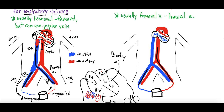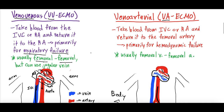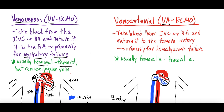We typically use the femoral veins on both sides, but you could also use the jugular vein in the neck, which also travels down to the heart. VV ECMO is a surrogate for respiratory failure when the lungs aren't working, such as in acute respiratory distress syndrome — which, for a timely correlate, we've seen a lot of with severe COVID-19.